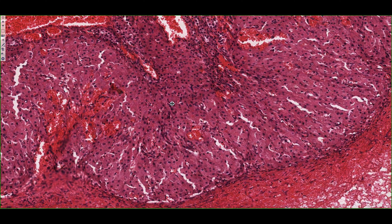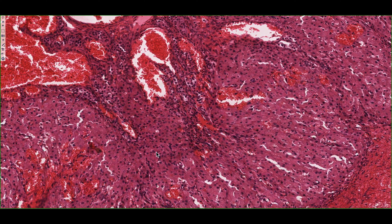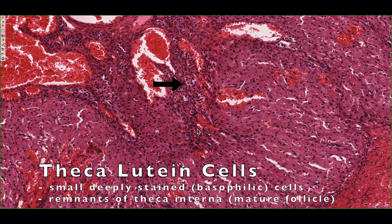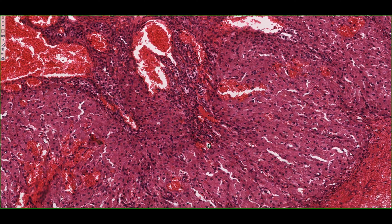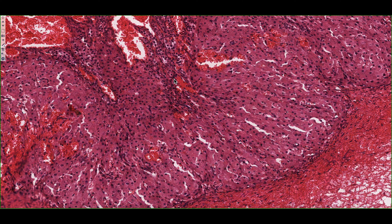Just adjacent to these cells in these invaginations, we see smaller cells that are more basophilic and more intensely stained. These are called the theca lutein cells and are remnants of the theca interna cell layer that we saw in the mature follicle.